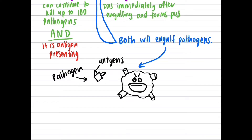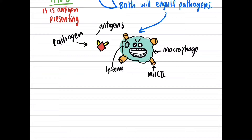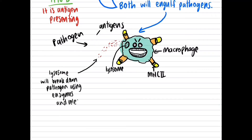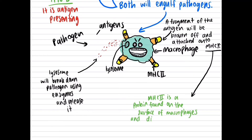During this process, macrophages break off and attach a fragment of the antigen onto a surface protein called the major histocompatibility complex MHC2. This is used in the third line of defense in the antibody-mediated response, which involves the production of antibodies to kill pathogens.